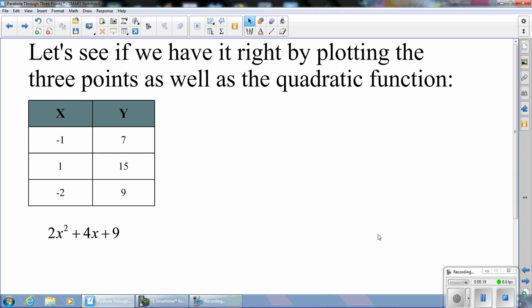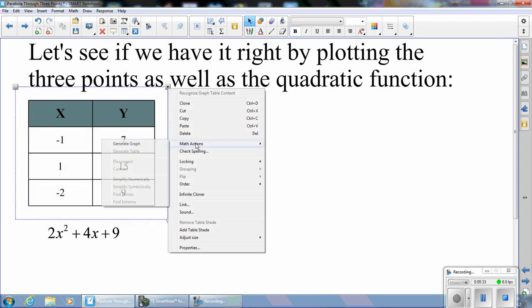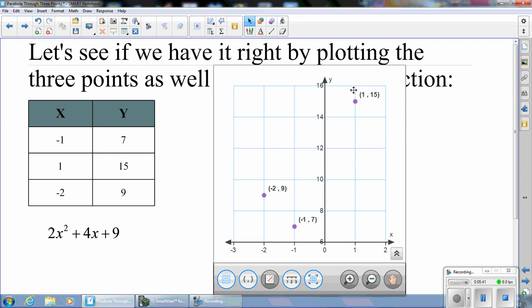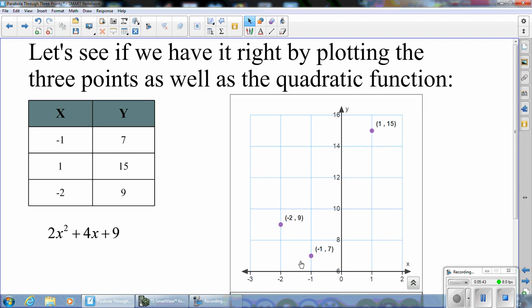Let's see if we have it right by plotting the three points as well as the quadratic function. Here we have a math table in notebook. I'm going to select the table. And under math actions, I'm going to select generate graph. And let's add the ordered pairs.